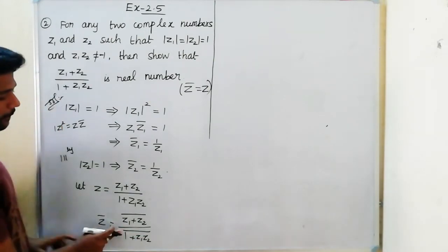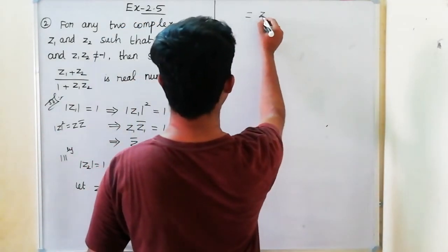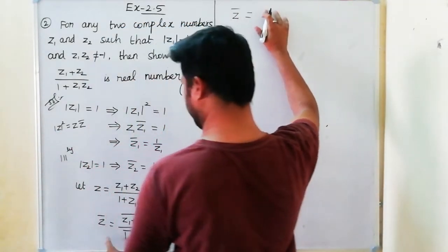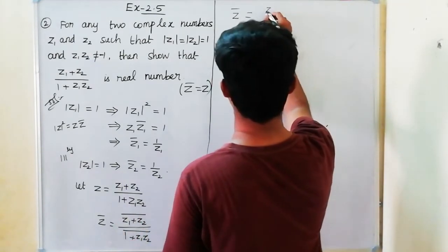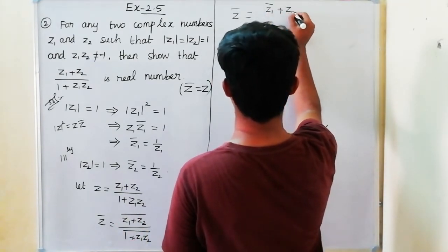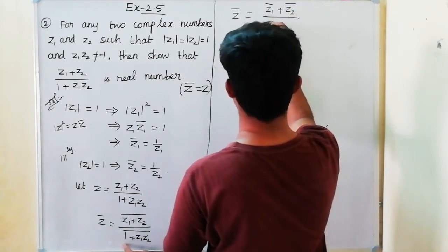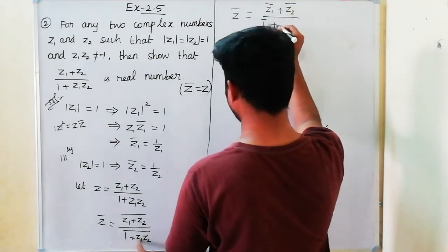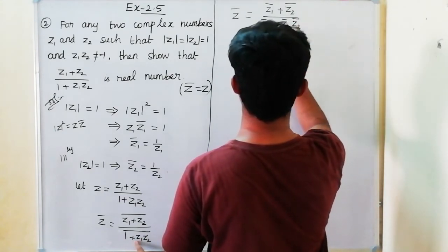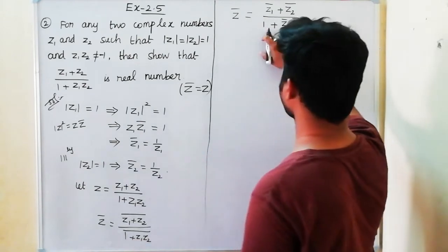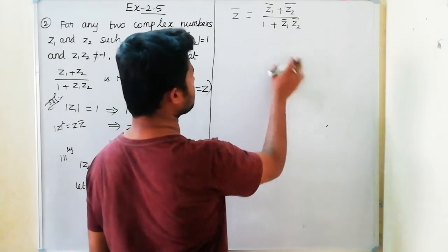Now apply the bar to each term. So z̄ equals (z̄1 plus z̄2) divided by (1 bar plus z̄1·z̄2). Since 1 bar equals 1, this becomes (z̄1 plus z̄2) divided by (1 plus z̄1·z̄2).